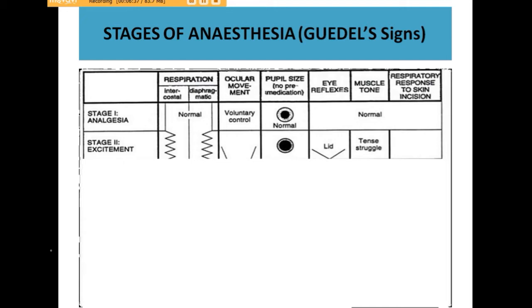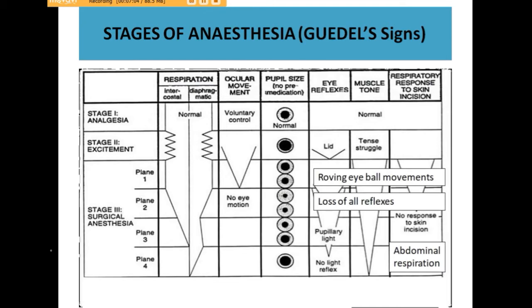During stage 2, the patient usually struggles. The duration of this stage is longer with ether, shorter with halothane, and absent with IV anesthetic agents. Difficulty occurs because of laryngospasm in this stage. With IV anesthetic agents, stages 1 and 2 are not visible as the patient directly enters stage 3. Stage 3 is divided into 4 planes. In plane 1, respiration becomes normal, the pupil starts decreasing in size, there are roving eyeball movements, and there is loss of cutaneous reflexes but peritoneal reflexes are still present.